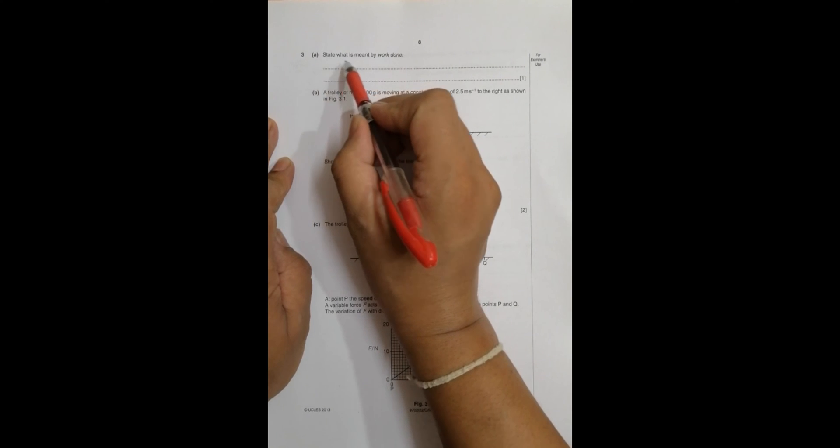Hello folks, this is your 2013 October November paper 22, question number 3. It has been requested by a viewer from YouTube. This chapter is concerned with work, energy, and power, or I can even associate it to the chapter dynamics. The first question is state what is meant by work done.